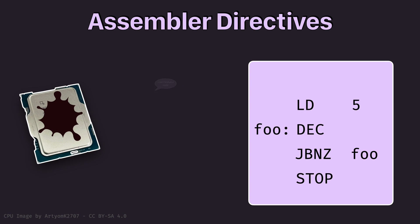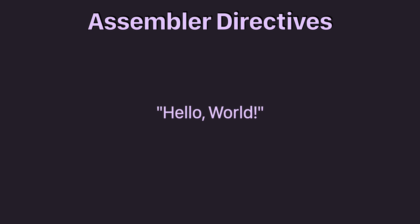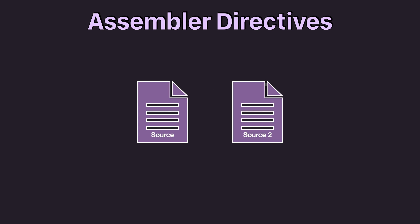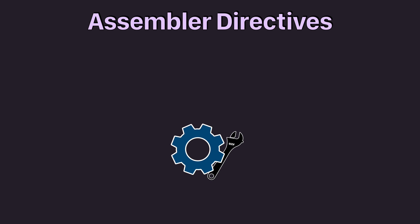Another thing common for most assemblers are assembler directives — special instructions that instruct the assembler, not the CPU, to do certain things. For example, some CPUs might need the code to start at a certain location in memory, which can be defined with a directive. In our imaginary assembly language this would be .start, and the assembler would put any code after it into the correct memory location where the CPU starts execution. Another directive could embed data into our program — for example, a hard-coded string like 'hello world' could be embedded with a .data directive. Or a .include directive could copy the contents of one source file into the current file, similar to include in C or C++. The directives vary by assembler and can do all sorts of complex things.